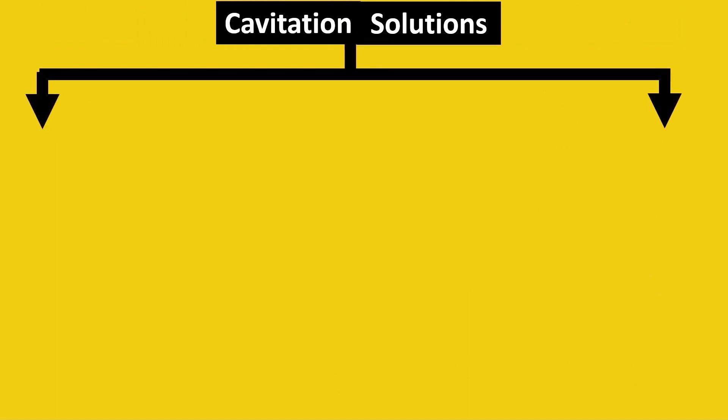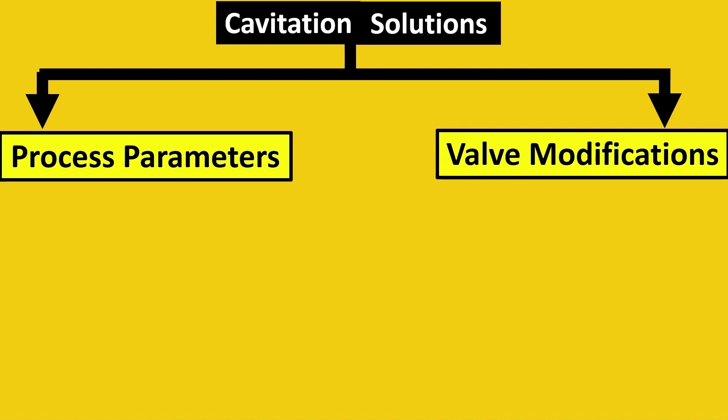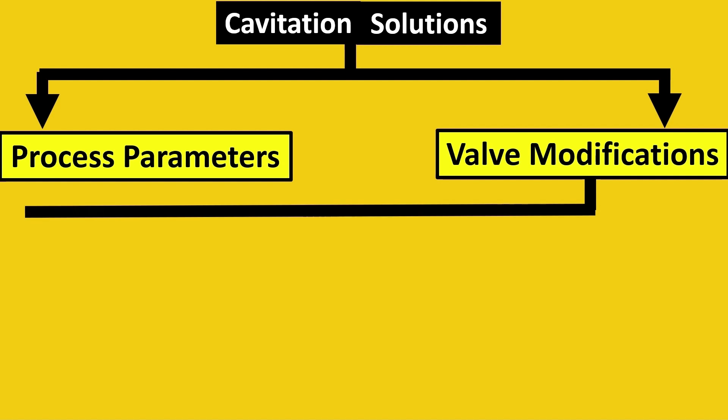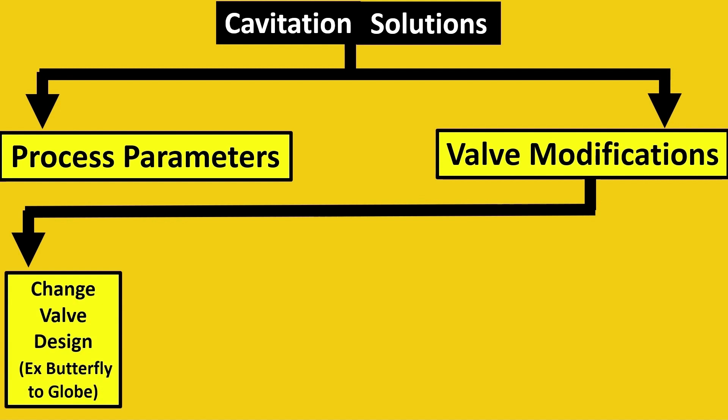For cavitation solutions, we have learned there are process parameters and valve modifications. We look first for valve modifications, which is first changing the valve design. Example: butterfly, as we said in the previous example, would have just one point of pressure drop. However, globe will have multiple points. It's better to go for globe then.